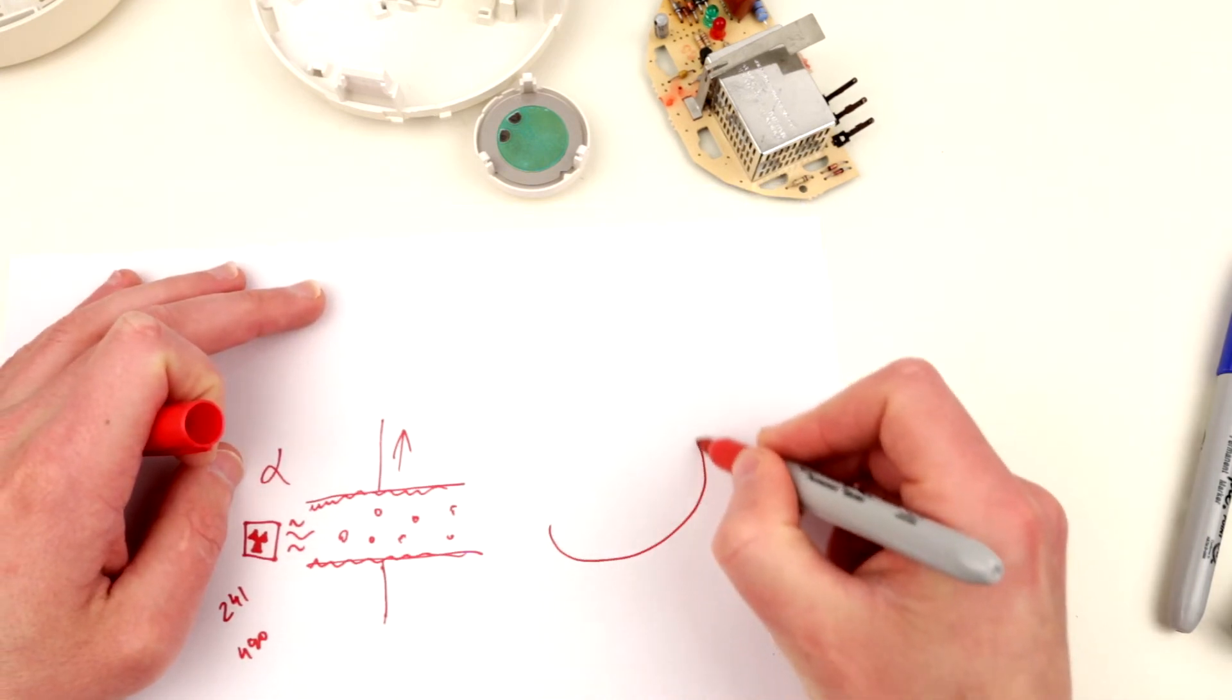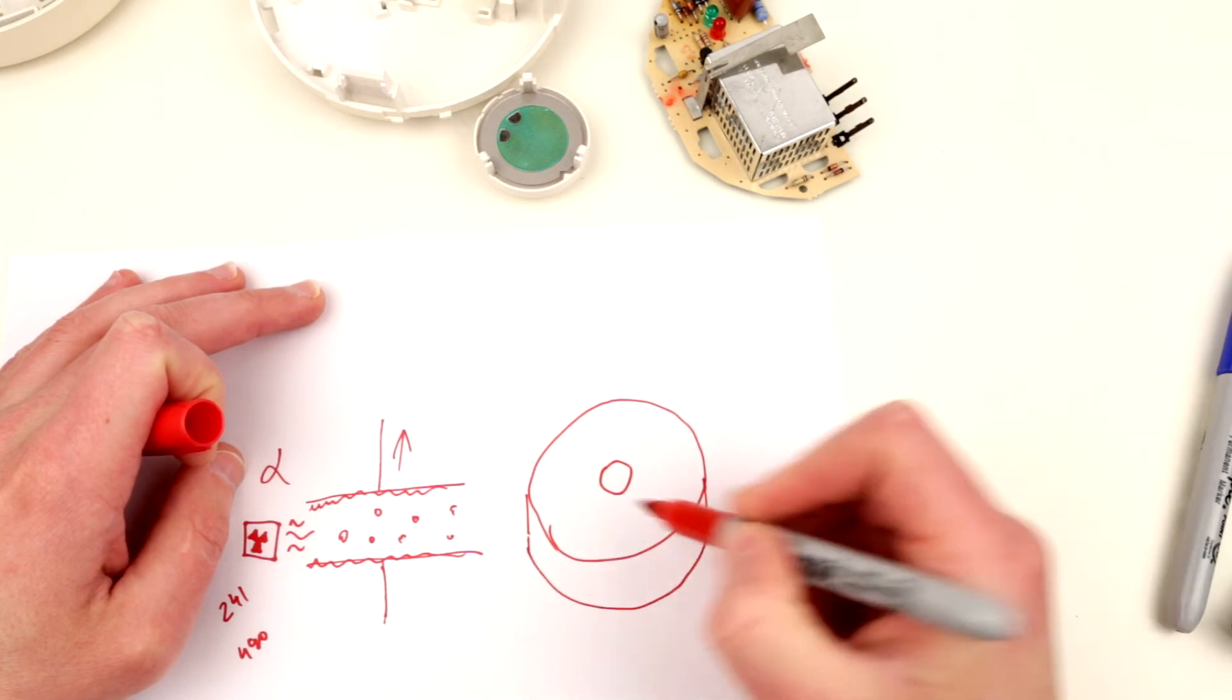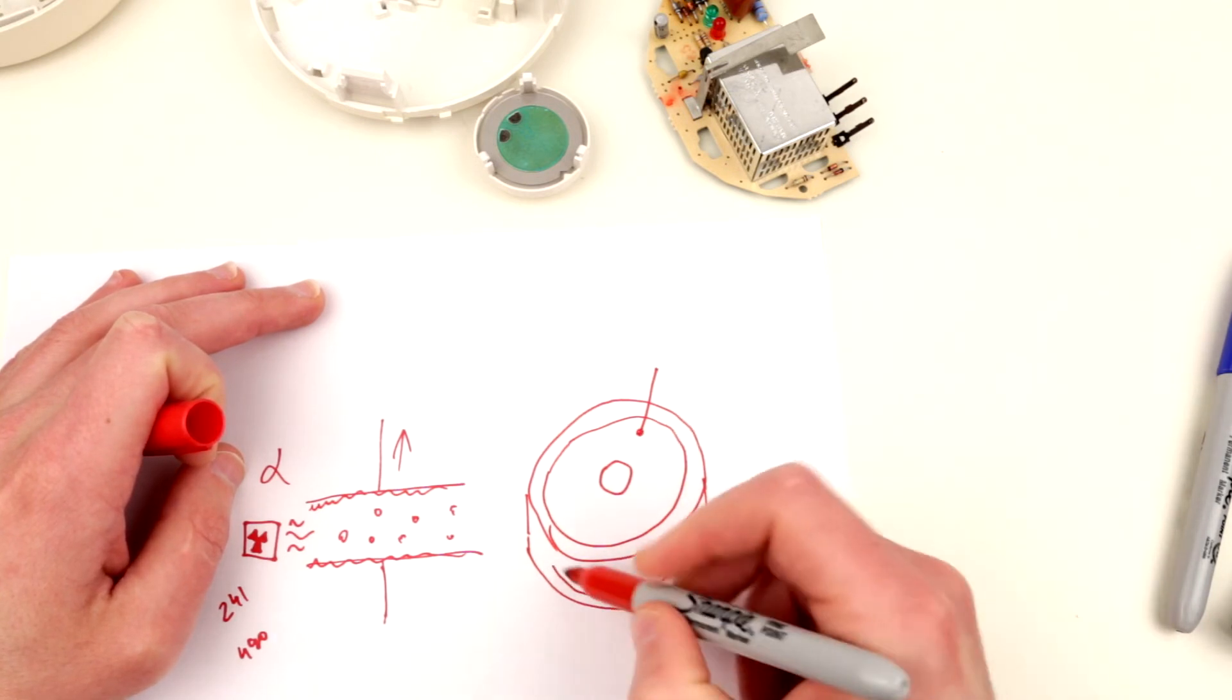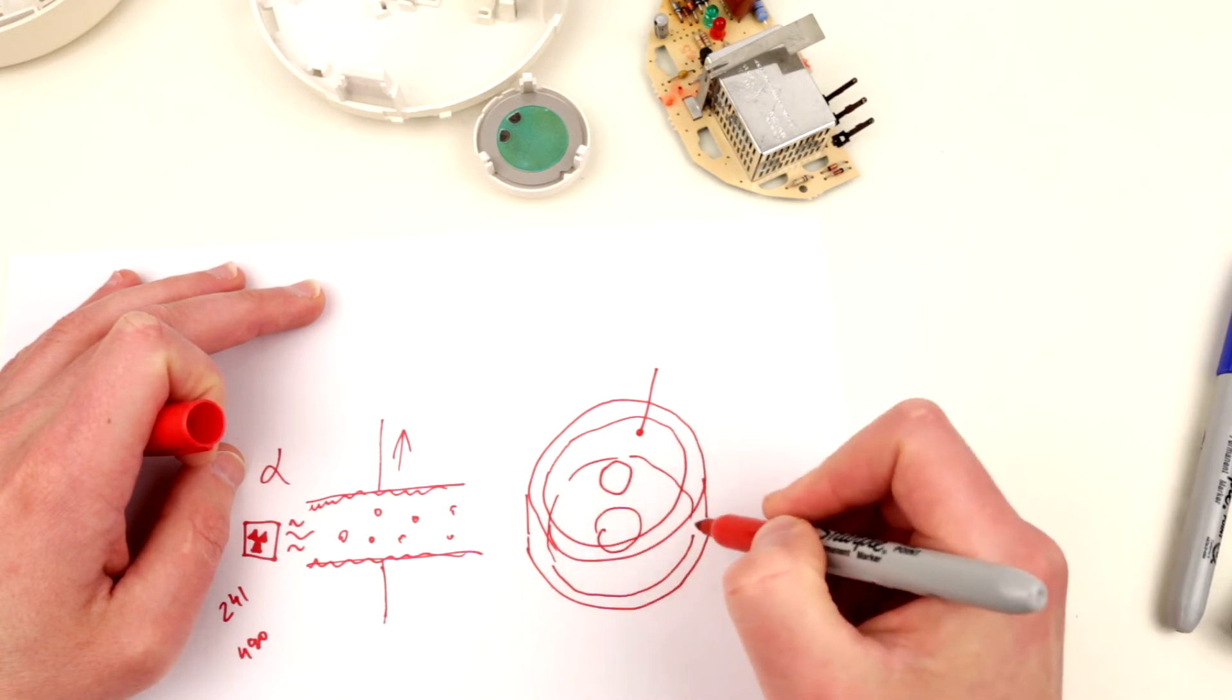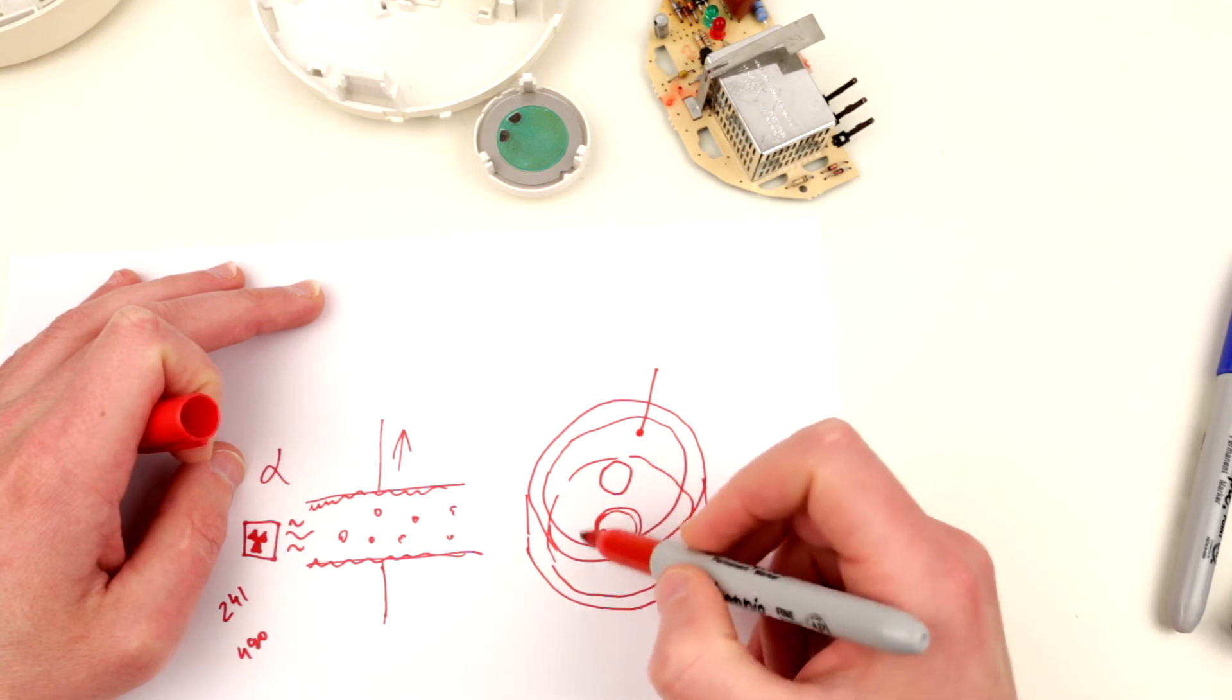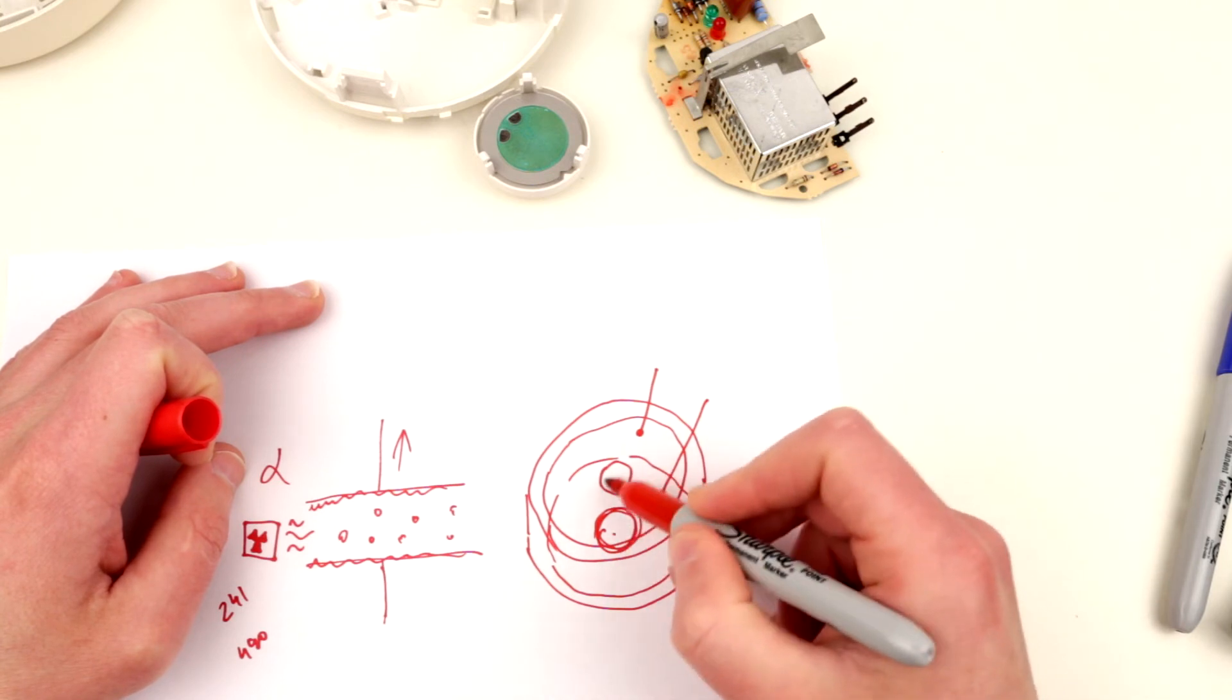So this particular smoke detector looks rather like this. So imagine a circle like that with an opening inside. So this is metal. This is metal. So this is going to be one electrode. And there is another circle exactly underneath, similar to this one. And inside there is a little tablet. So this tablet contains americium-241. So essentially this is going to be another electrode.